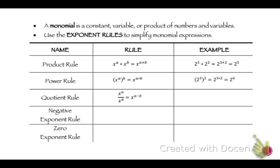Quotient rule — that's x to the a divided by x to the b. Division goes with subtraction, so that's going to be x to the a minus b. Example: 2 to the 3 over 2 to the 2 equals 2 to the 3 minus 2, which is 2 to the 1st power.